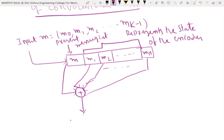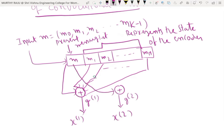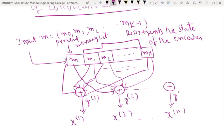The output of the first modulo-2 adder is x(1), and its generator sequence is represented by g(1). The second modulo-2 adder output is x(2), and its generator sequence is g(2). Similarly, the last modulo-2 adder output is x(n), and the generator sequence of that last modulo-2 adder is g(n).